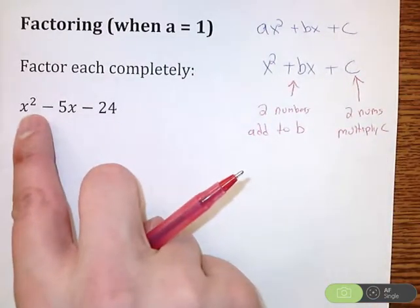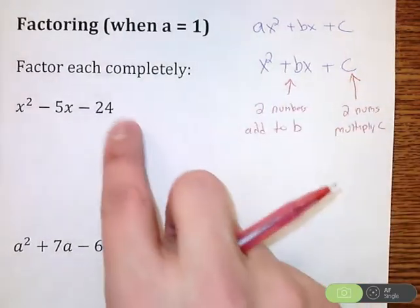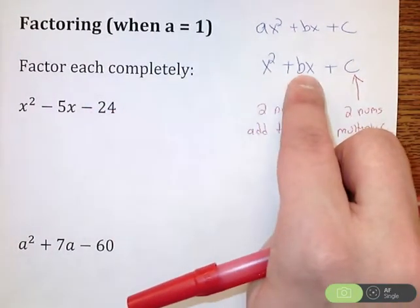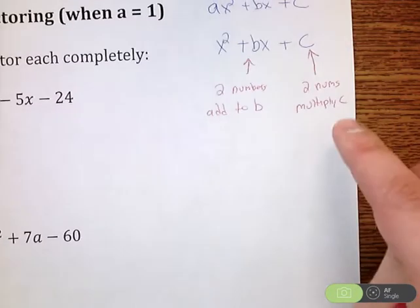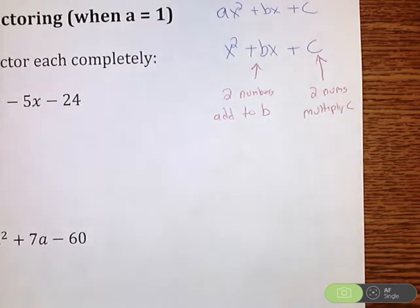So in this case, this first one, we have x squared minus 5x minus 24. Negative 24 would represent c. Negative 5 would represent b. So I'm looking for two numbers that multiply to c and two numbers that add to b.